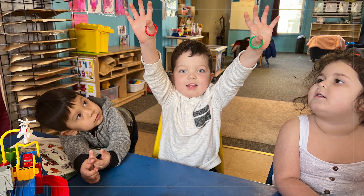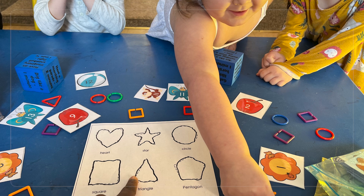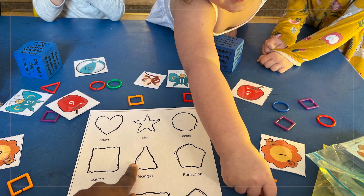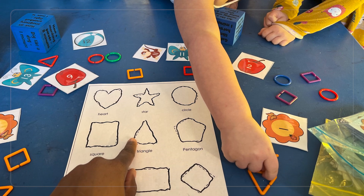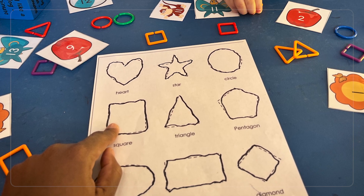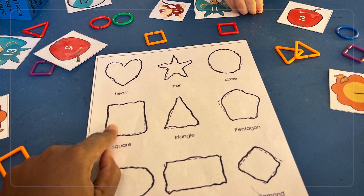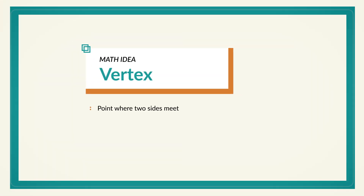What's really important in this game is that you're helping children pay attention to the attributes or characteristics of shapes — things like how many sides and vertices a shape has. A vertex is the mathematical term for where two sides meet, what you might normally call a corner of the shape.